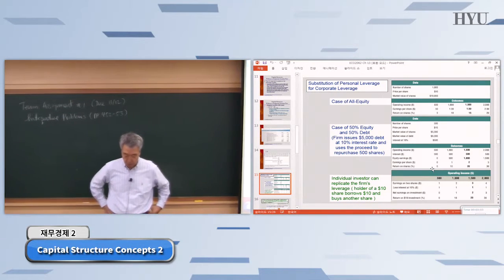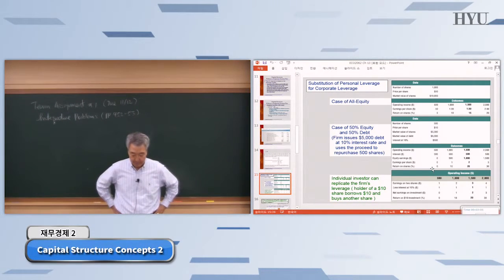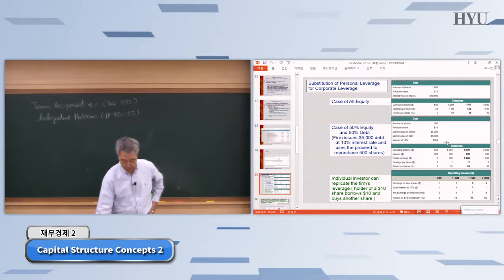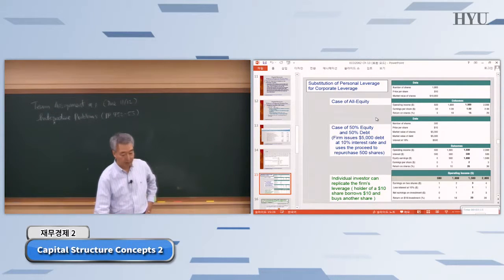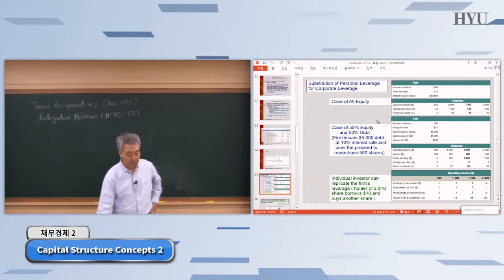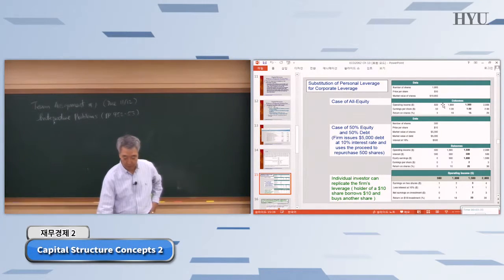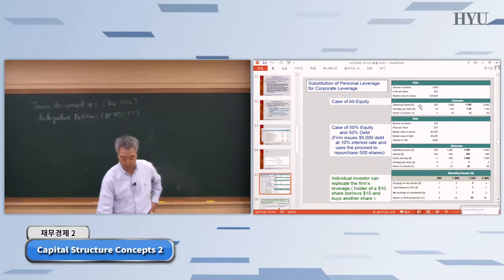Let me go over these new slides. We have three separate charts here. The first chart is about the case of all equity — we're talking about an unlevered firm. This firm has no debt. Let's say the firm has 1,000 shares outstanding and the price of each share is $10. That means the total market value of equity is $10,000. We have four possible scenarios of operating income, EBIT.